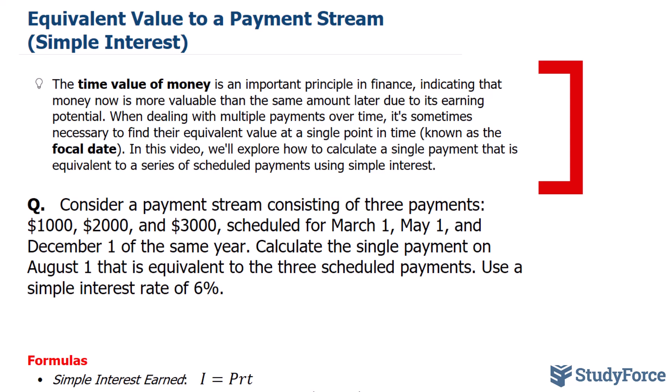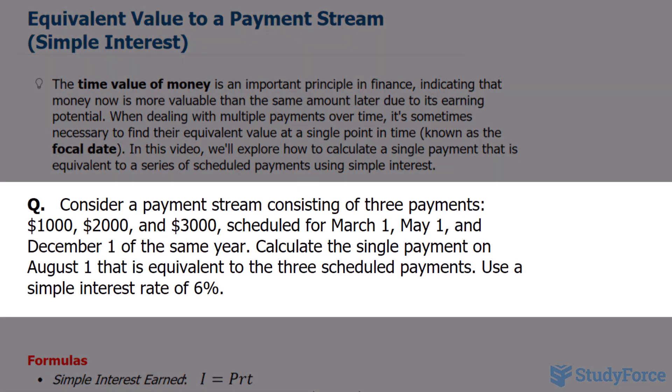In this video, we'll explore how to calculate a single payment that is equivalent to a series of scheduled payments using simple interest. The question reads, consider a payment stream consisting of three payments: $1,000, $2,000, and $3,000, scheduled for March 1st, May 1st, and December 1st of the same year. Calculate the single payment on August 1st that is equivalent to the three scheduled payments. Use a simple interest rate of 6%.